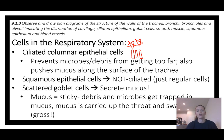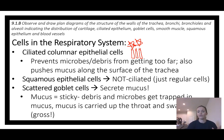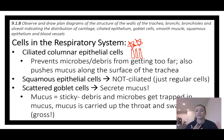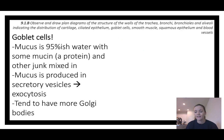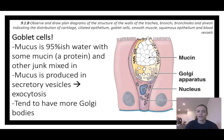Next are squamous cells — squamous just means flat. Squamous epithelium cells are not ciliated; they don't have little hairs. Then we have goblet cells, named for their goblet-like shape. They secrete mucus and contain lots of Golgi bodies and mitochondria because secreting mucus is an active process. The cilia help push the mucus and all the gunk up your throat and down into your esophagus.